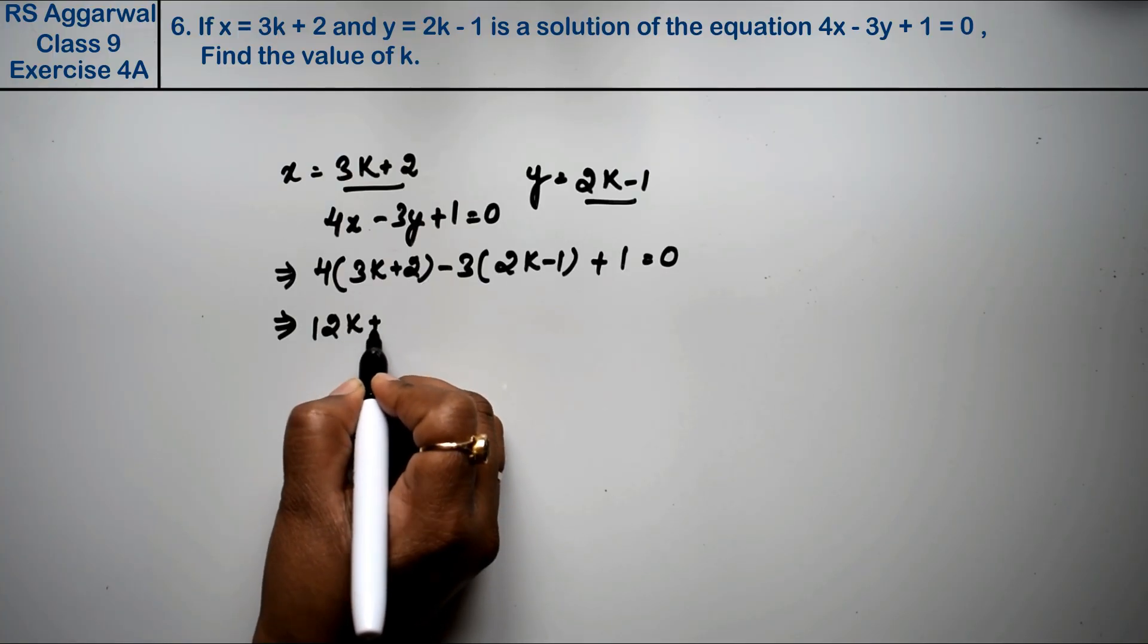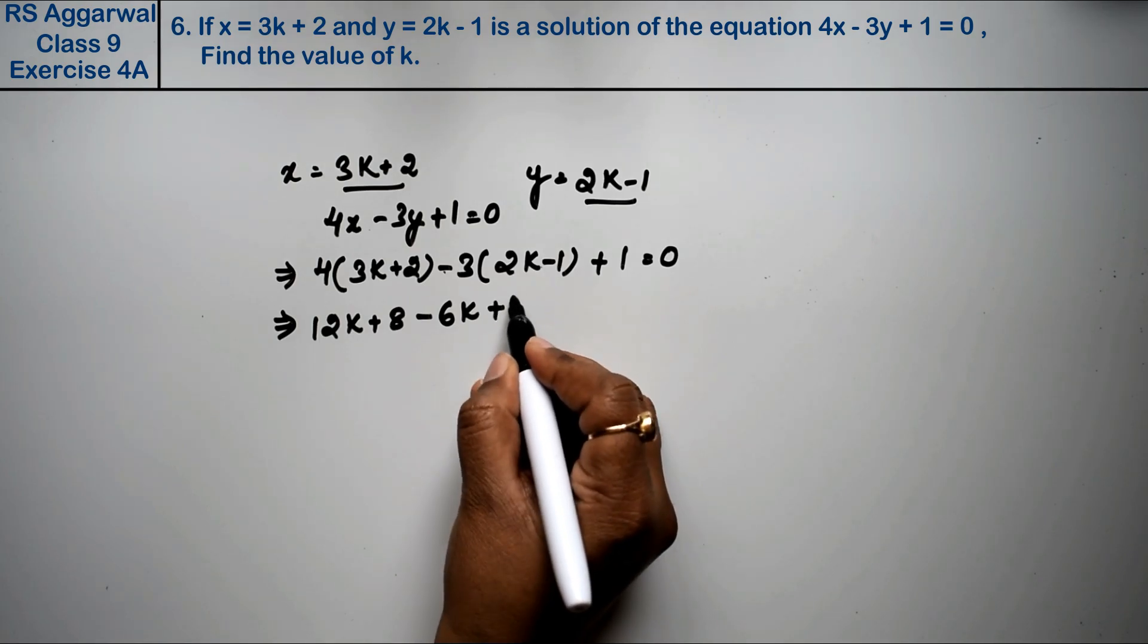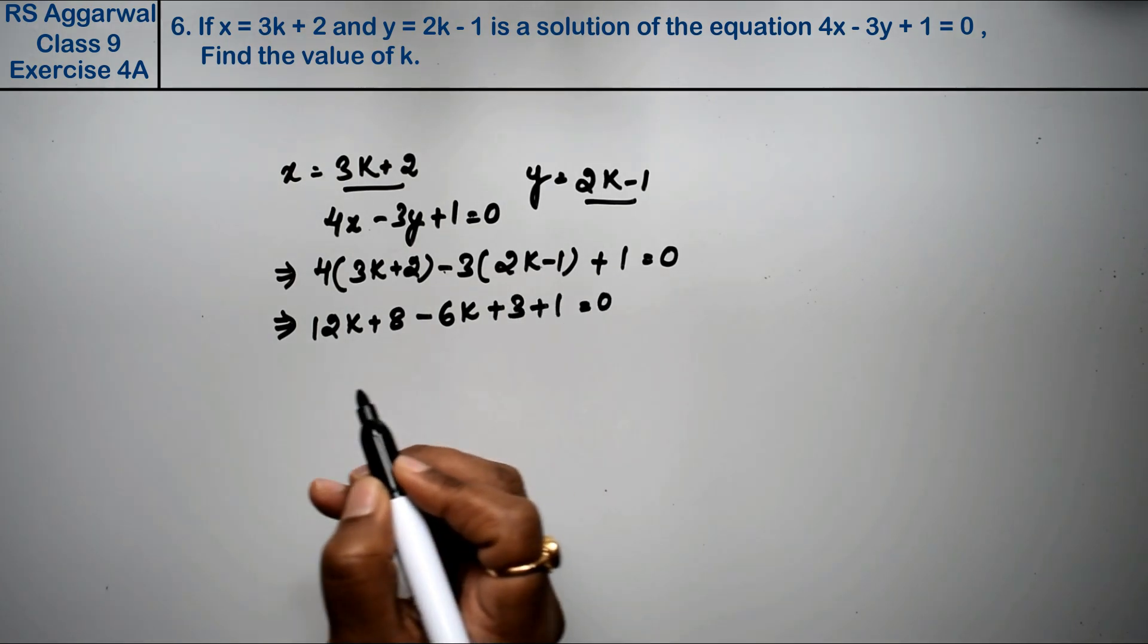That gives us 12k plus 8 minus 6k, minus minus becomes plus 3, plus 1 equals 0.